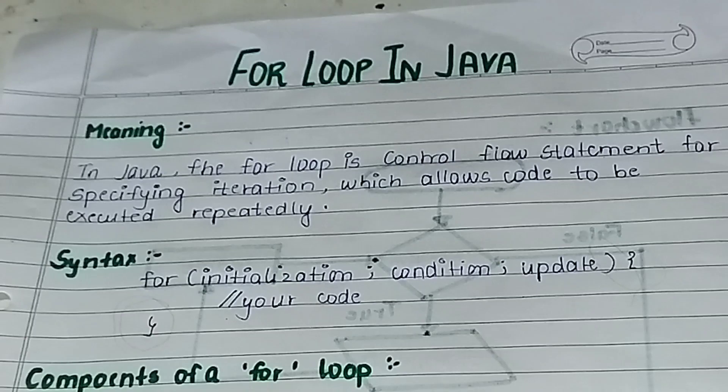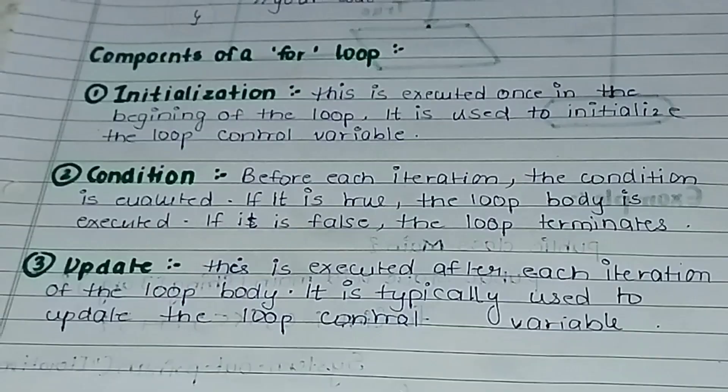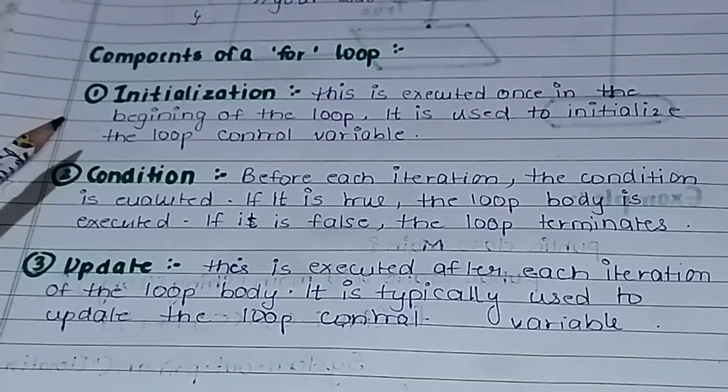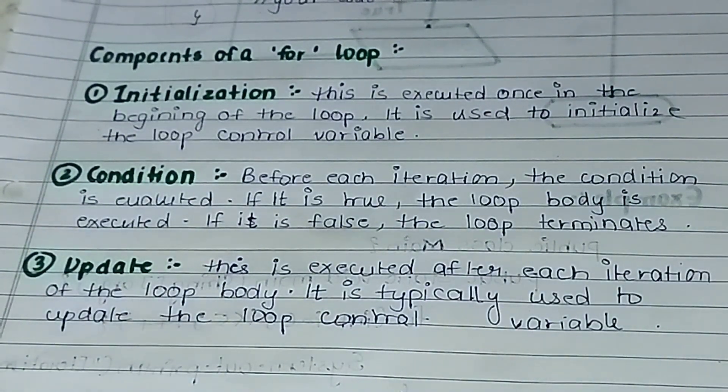Now let's look at the components in detail. First one is initialization - this is executed once in the beginning of the loop and it is used to initialize the loop control variable. Whatever variable we use in the loop, we first initialize it. We initialize it to some value like 1 or 0, whatever value, wherever we want to start from. That's why we use initialization. The initial value remains fixed throughout, though the value changes, the initial value stays what we fixed.